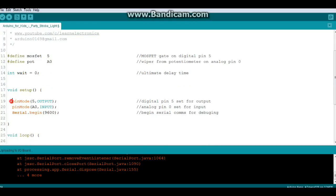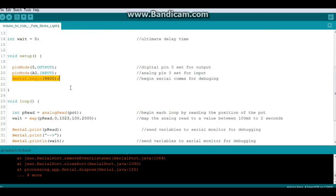In our setup, we set pin 5 to output and pin 0 to input. Then we do our serial begin so that we can look at our variables and debug if necessary.